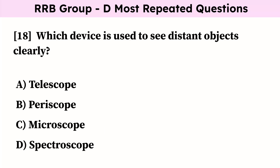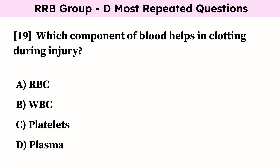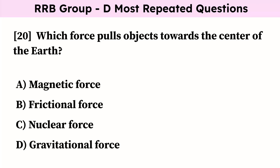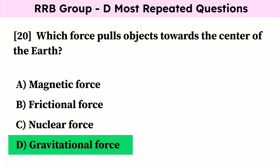Which device is used to see distant objects clearly? Correct answer is telescope. Which component of blood helps in clotting during injury? Correct answer is platelets. Which force pulls objects towards the center of the earth? Correct answer is gravitational force.